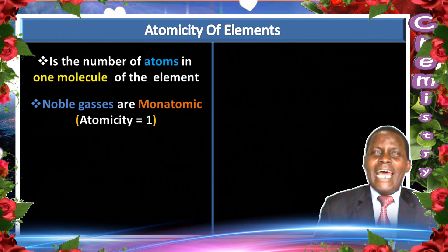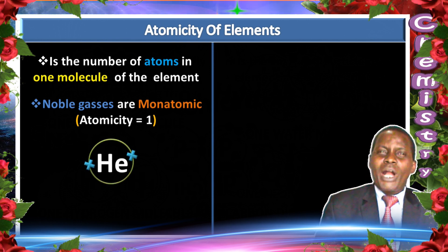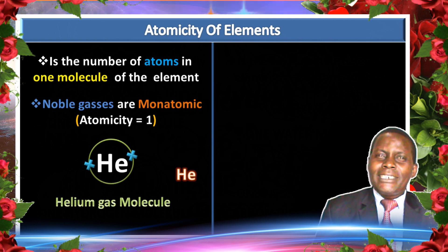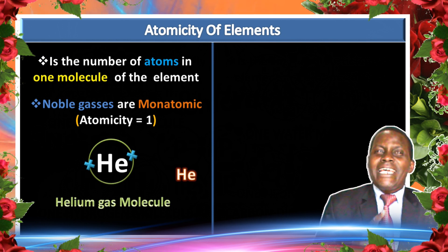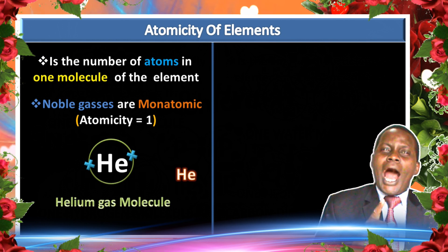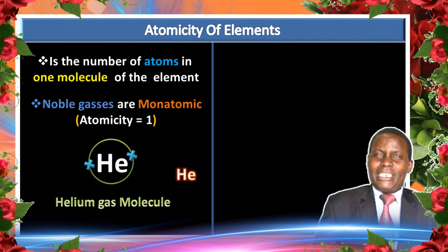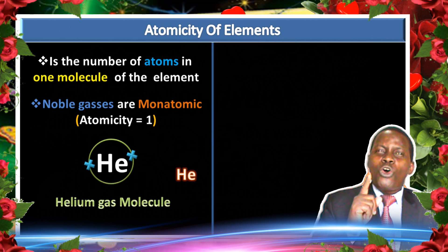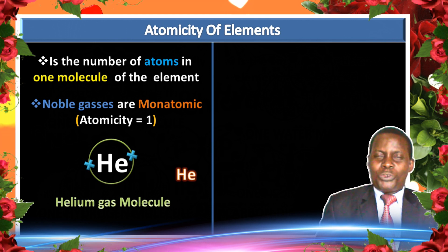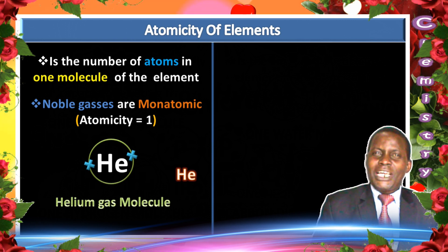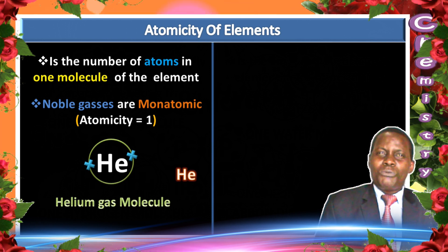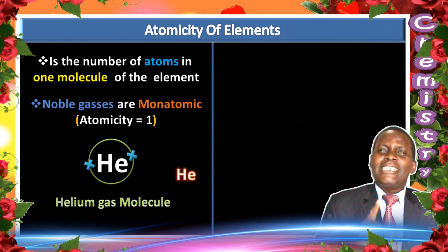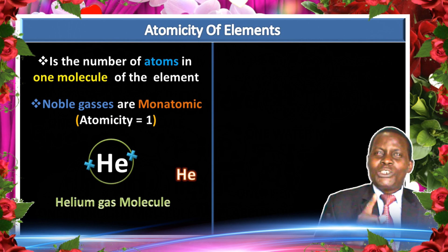For example, the atomicity of the noble gases is one — they are monoatomic. In one molecule of a noble gas there is only one atom. For example, helium is a noble gas, represented by the symbol He, and it has one atom in its molecule.